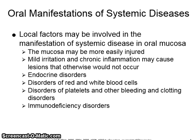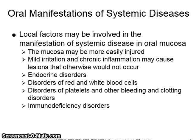The mucosa may be more easily injured. Mild irritation and chronic inflammation may cause lesions that otherwise would not occur. Endocrine disorders can be manifested, as well as disorders of red and white blood cells, disorders of platelets and other bleeding and clotting disorders, and immunodeficiency disorders can also have an effect on oral tissues.